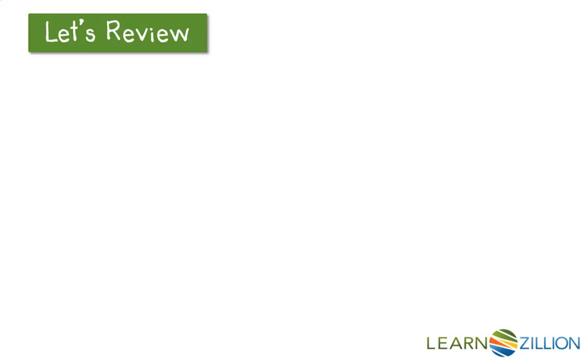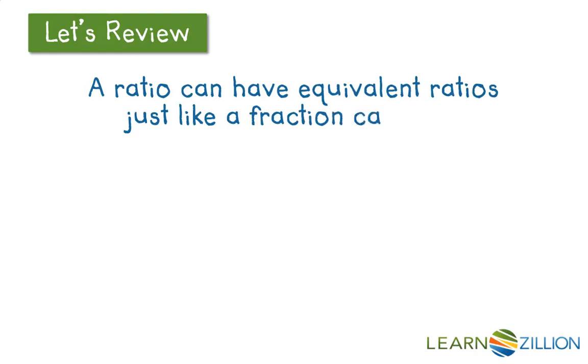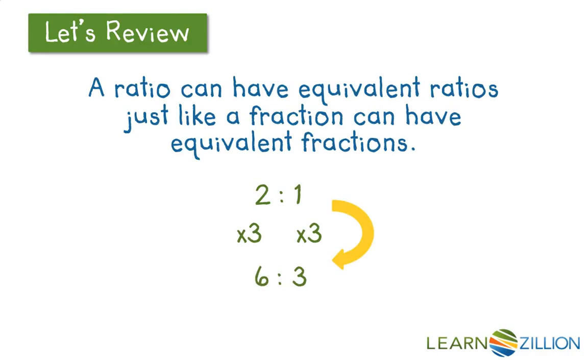Before we begin, let's recall the key idea that's going to allow us to solve ratio problems. That idea is that a ratio can have equivalent ratios just like a fraction can have equivalent fractions. So for instance, a ratio such as 2 to 1, if we decided that we had 3 groups with this ratio, we could also say the ratio is 6 to 3. 2 to 1 and 6 to 3 are called equivalent ratios because they express the same pattern.